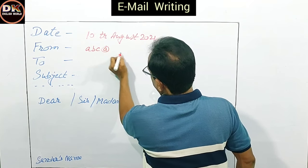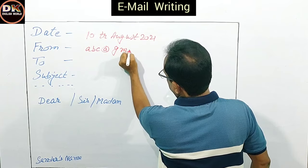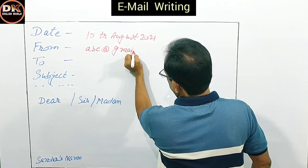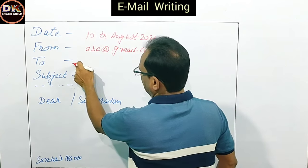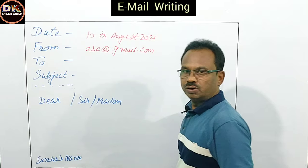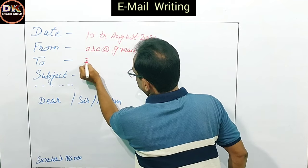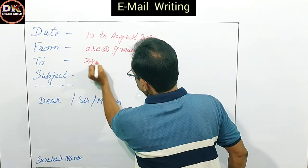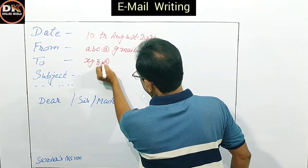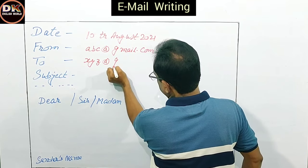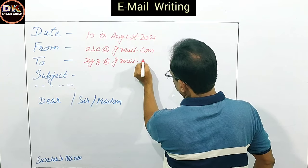Supposed karta hoon iske email id hai ABC at the rate Gmail.com. To: aap jinhe bhej rahe ho, supposed karta hoon unka email id hai XYZ at the rate Gmail.com.